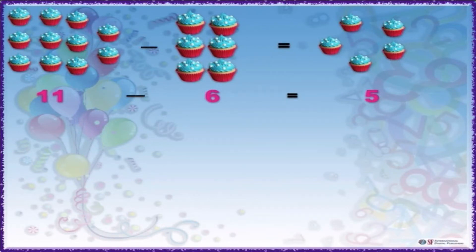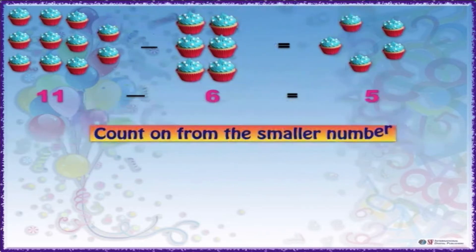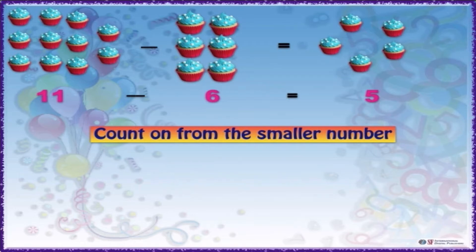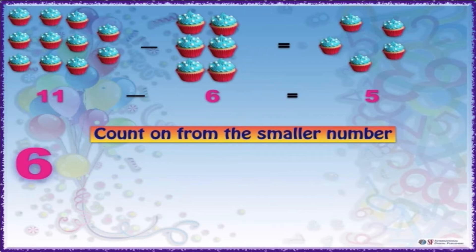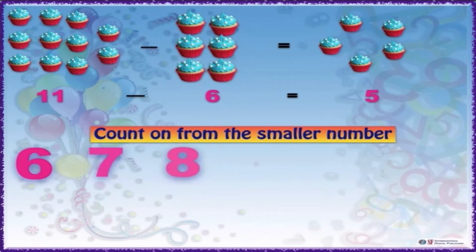To subtract 6 from 11, count on from the smaller number till 11. In this example, the smaller number is 6. Let's count from 6 to 11: to remove 6 from 11, count 7, 8, 9, 10, and 11.